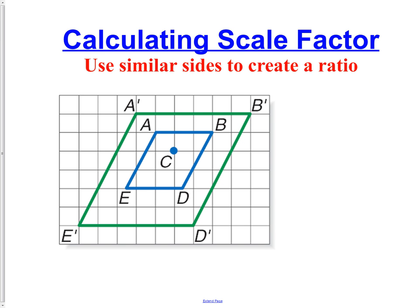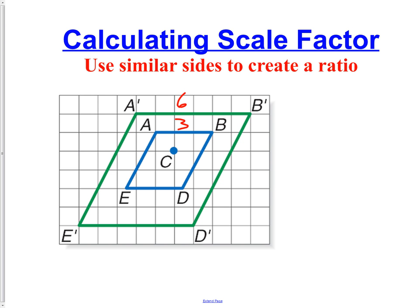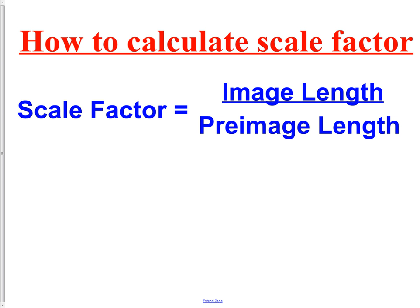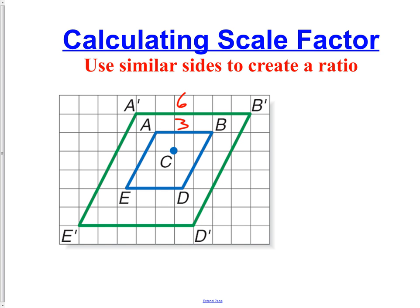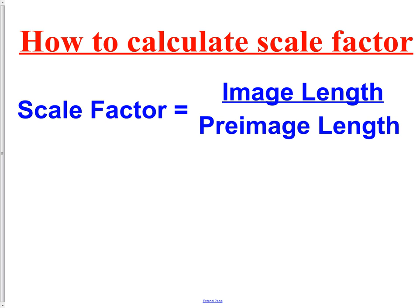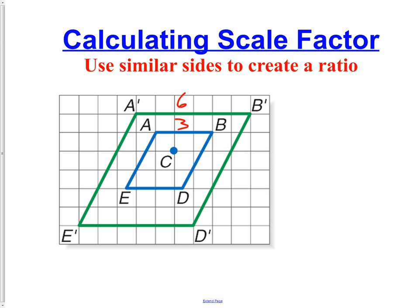To calculate scale factor, use similar sides to create a ratio. Looking at this picture, I want to use sides I can actually count — from A to B I see three boxes, and from A-prime to B-prime I see six boxes. The image is the item with prime notation, the pre-image is without. So we have six over three, which reduces to two. As a fraction: two over one; as a whole number: two.